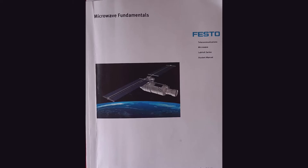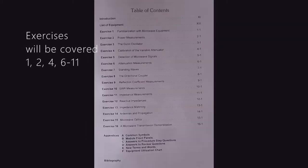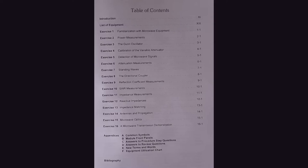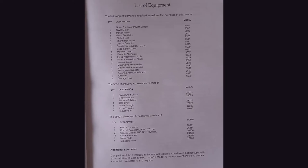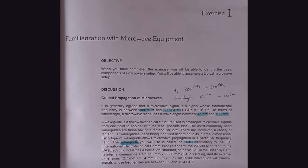You are advised to have an instruction manual like the one displayed on the screen. A concise electronic copy of this manual will be posted on D2L. This instruction manual explains 16 different experiments; out of them, nine important experiments — including power measurement, attenuation measurement, impedance measurement, and reflection measurements — are covered under the electromagnetic course. Your course includes exercises one, two, four, six, seven, eight, nine, ten, and eleven.